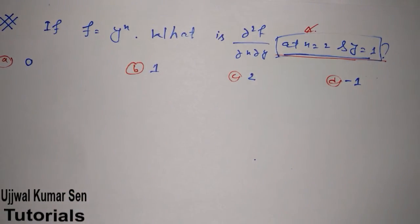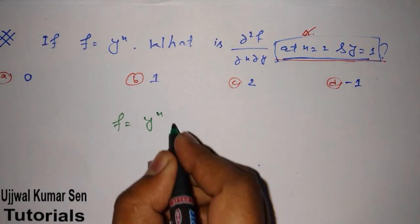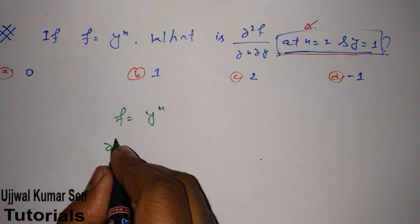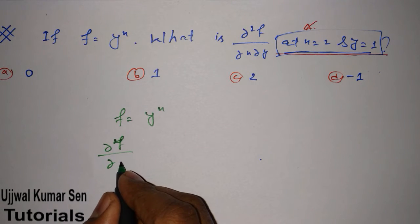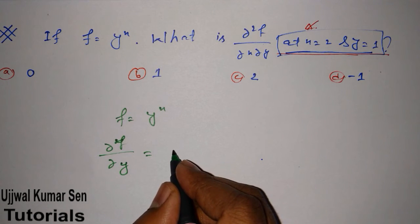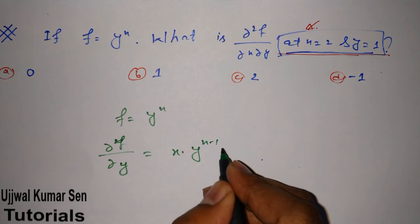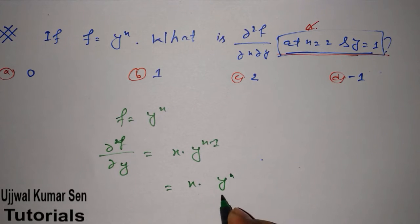Let's get started. We have given f = y^x. If I do the first derivative, ∂f/∂y, then I will get simply x times y^(x-1). We can write this as x/y times y^x.